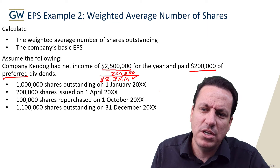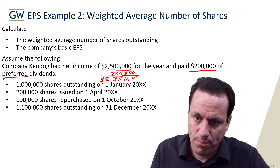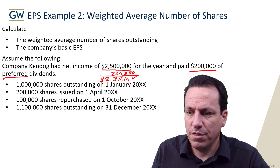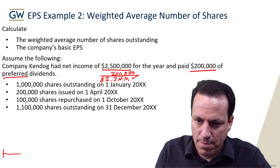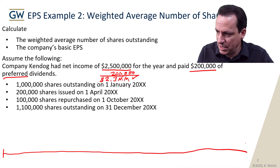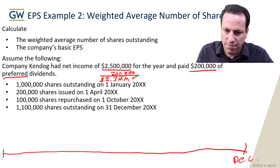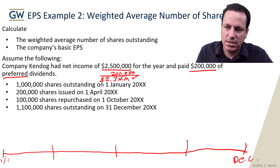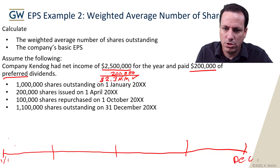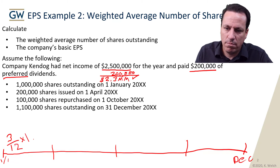We have 1 million shares outstanding January 1st, and we end up with 1.1 million shares outstanding on December 31st. I'll represent this on a timeline. Imagine this is the year — this is January 1st and this is December. We have different points in the year, different quarters. For all the way through the three months of January, February, March — three out of 12 months — we have 1 million shares outstanding.